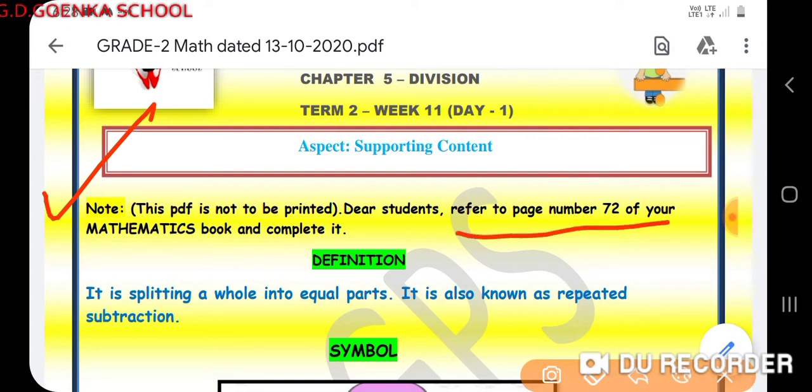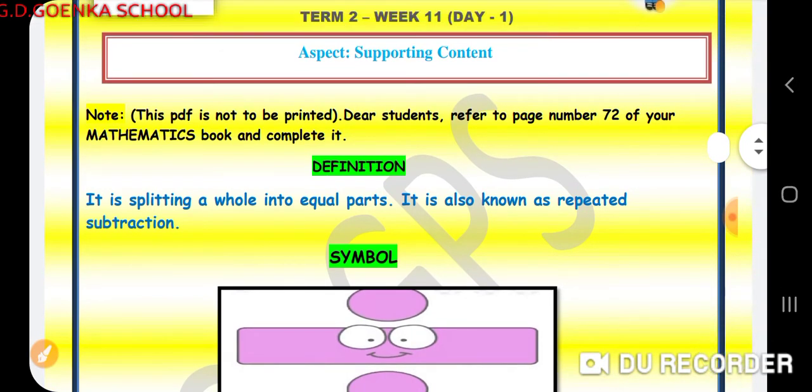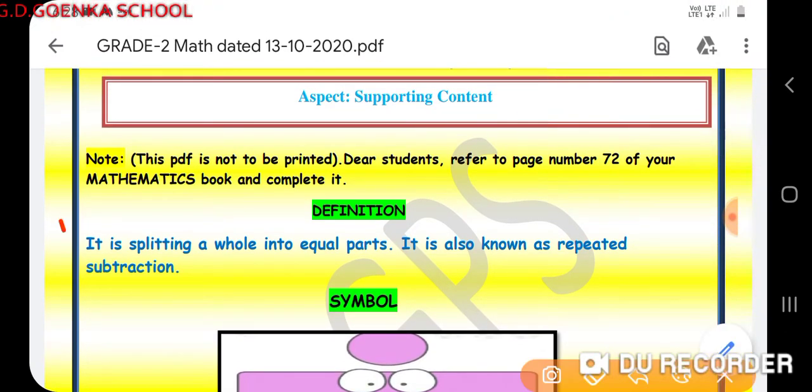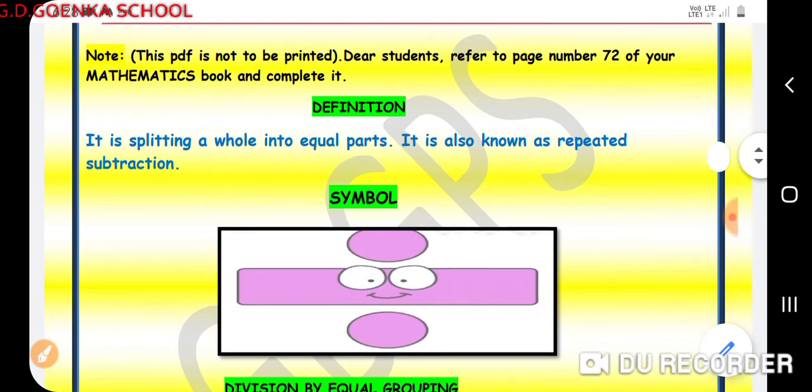Dear Goenkans, today we are starting with division and what is division known as? It is splitting a whole into equal parts. It is also known as repeated subtraction. It means equal distribution of data or objects. That is division.